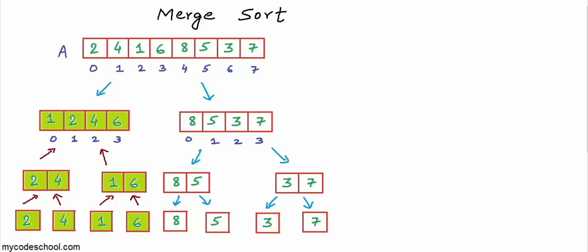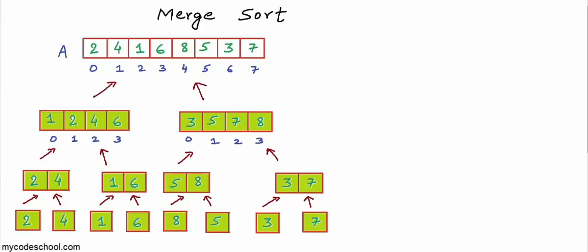Coming to the right side, all sub-lists with just one element are already sorted, so we will start merging back. Finally, the two sorted sub-lists 1, 2, 4, 6 and 3, 5, 7, 8 can be merged back into the original list A.